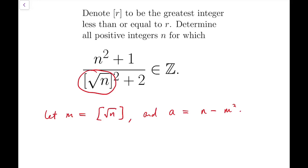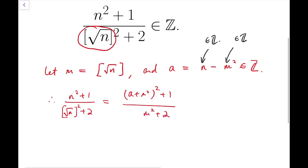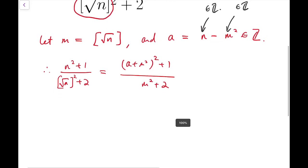We can see that a should be a small number, because the floor function of square root of n should be a number very close to n, with a difference less than 1. And even after squaring, we still have a relatively small integer. Note that n, m, and a are all integers. So now the given expression becomes: a plus m squared, whole squared, plus 1, over m squared plus 2.